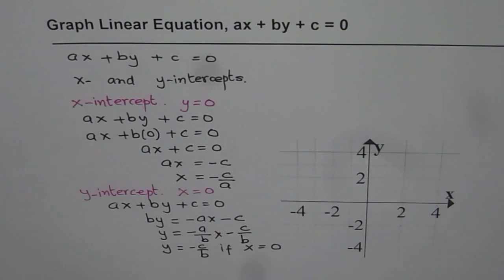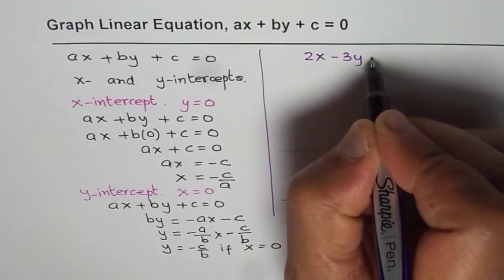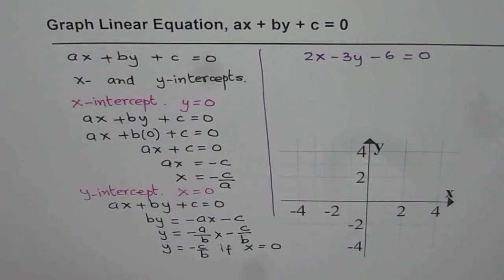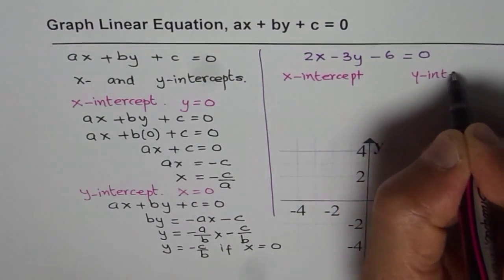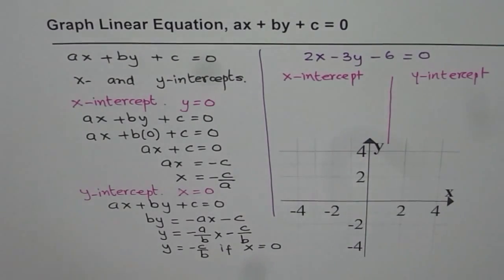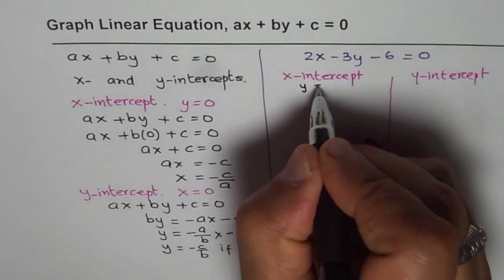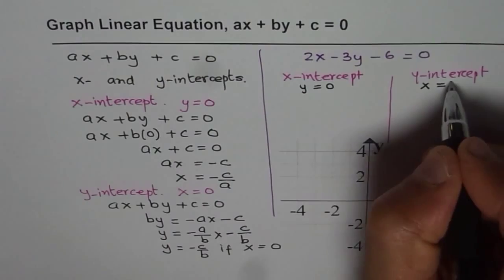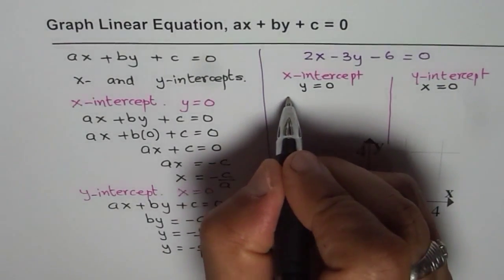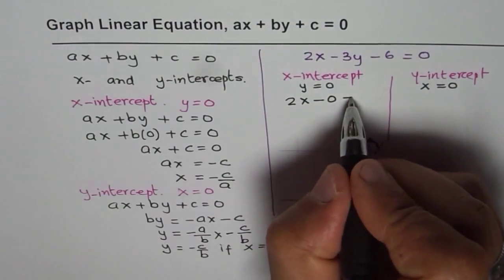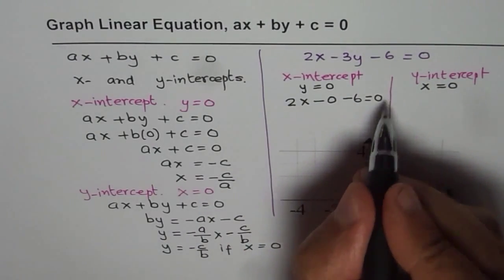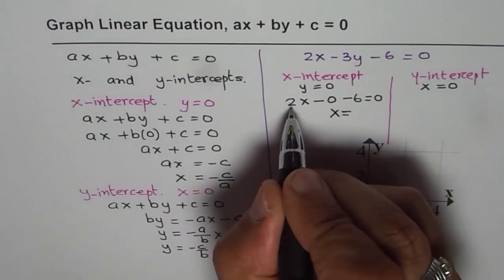Let us take up some examples to help understand the concept. Let's say the equation is 2X minus 3Y minus 6 equals to 0. From this equation in standard form, we have to find the X intercept and Y intercept. For X intercept, Y is equal to 0. So the equation becomes 2X minus 3 times 0 minus 6 equals to 0. We can solve for X — taking 6 to the other side gives us X equal to 6 divided by 2, which is 3.